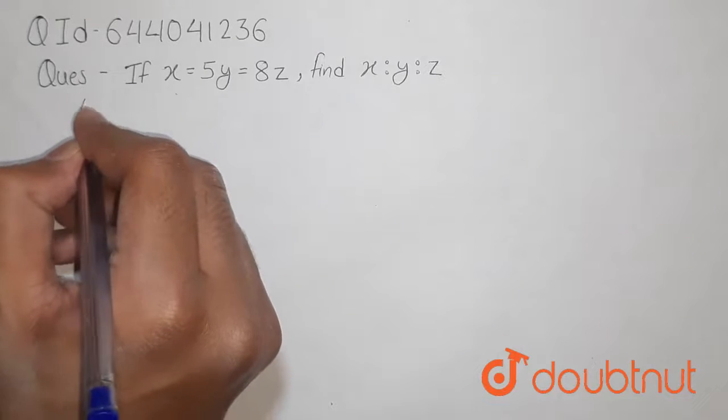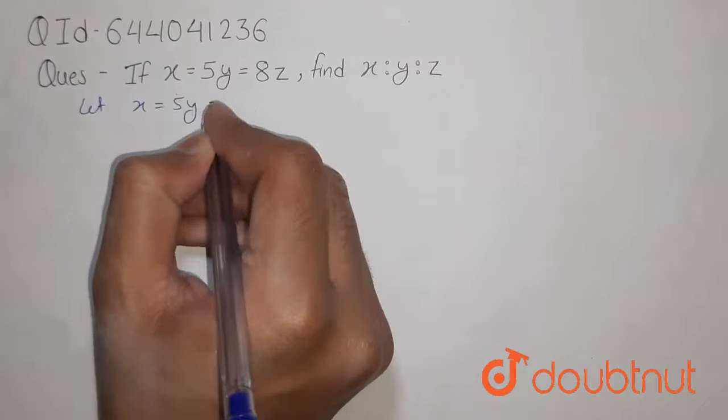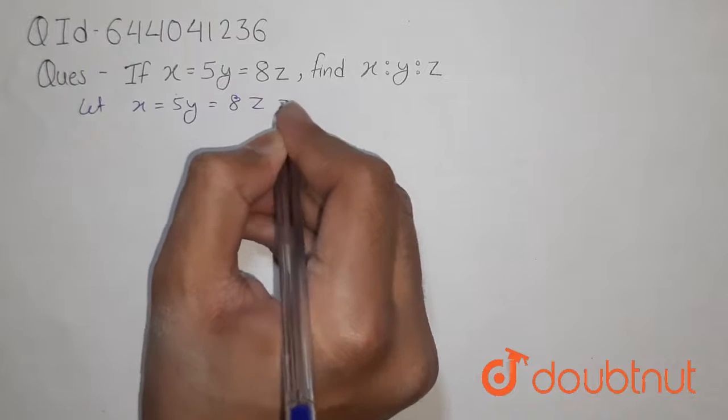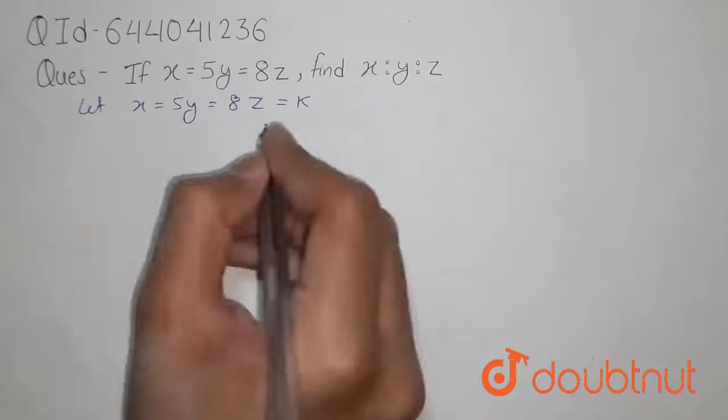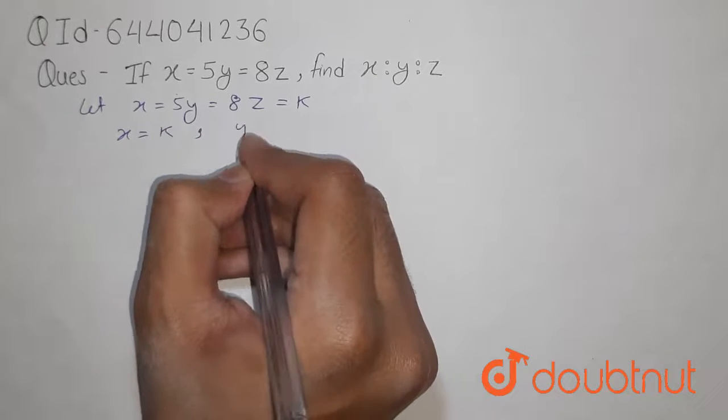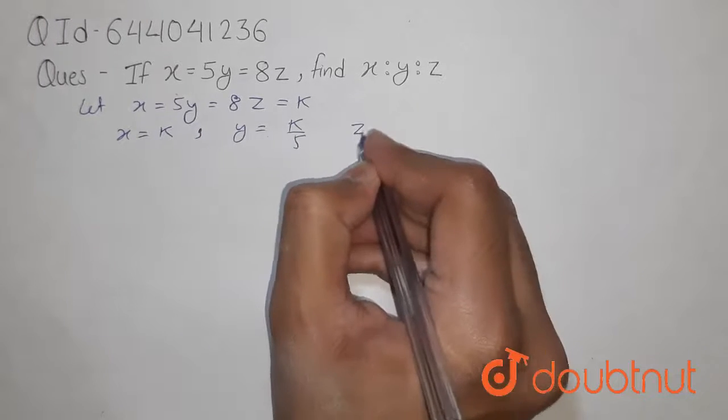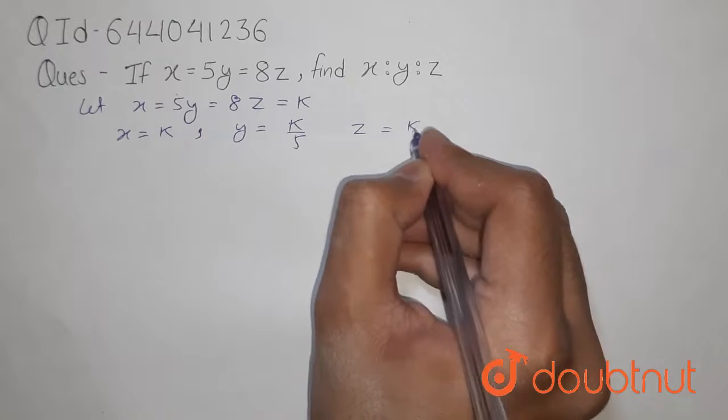Now, we can write, let x is equals to 5y is equals to 8z is equals to k. We have assumed that. Now x will be equals to k and y is equals to k by 5 and z can be written as k by 8.